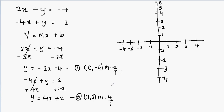Since the second equation has a positive slope, let's graph it first. When graphing, you start with the y-intercept. The y-intercept is positive 2, so my first point is (0, 2). The slope is 4 over 1, and slope is rise over run. Rise is 4, which is positive, so I go up 1, 2, 3, 4, and then over 1 to the right. My second point is somewhere here.